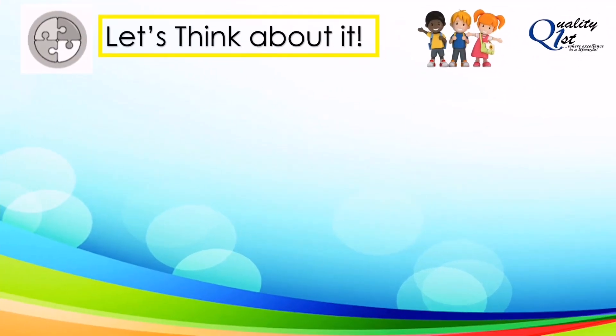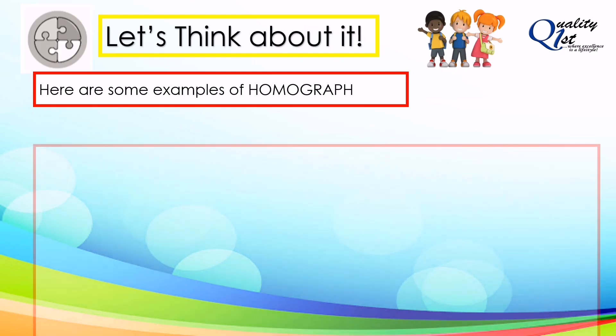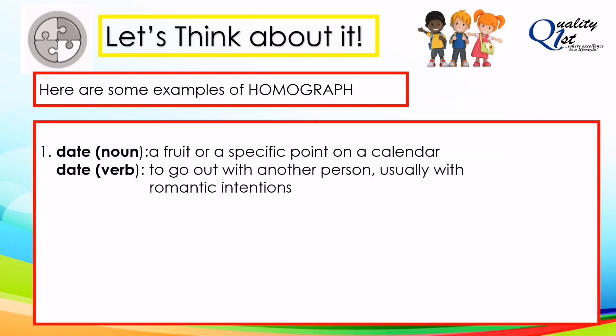Now let's have some examples of homographs. Number one is date. Date as a noun means a fruit, or a specific point on a calendar. The next one is date as a verb: to go out with another person.